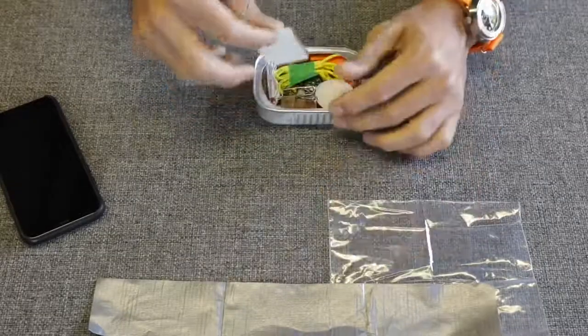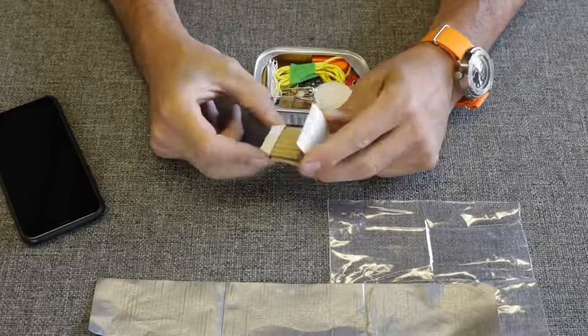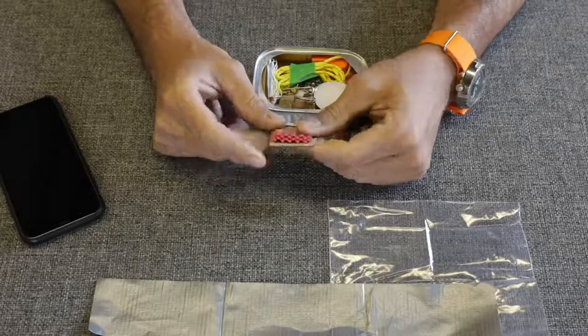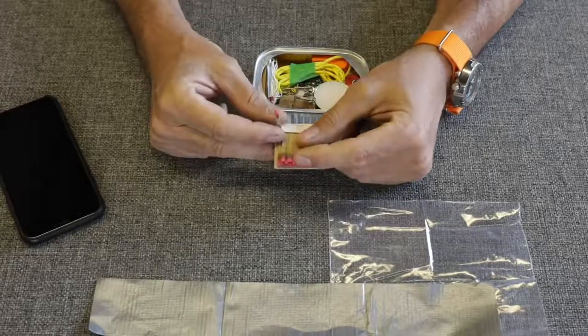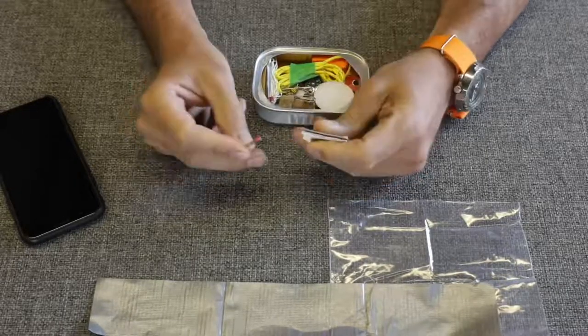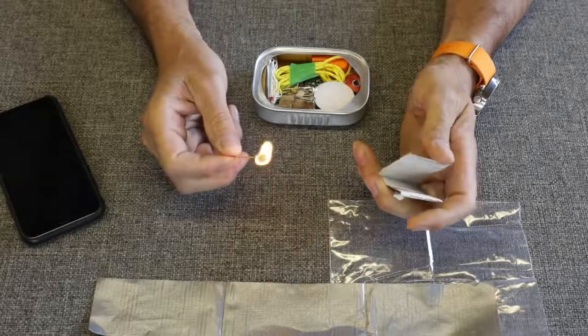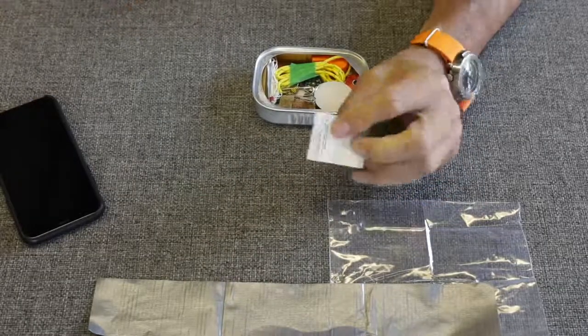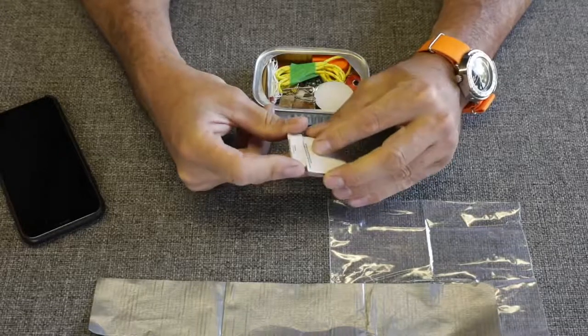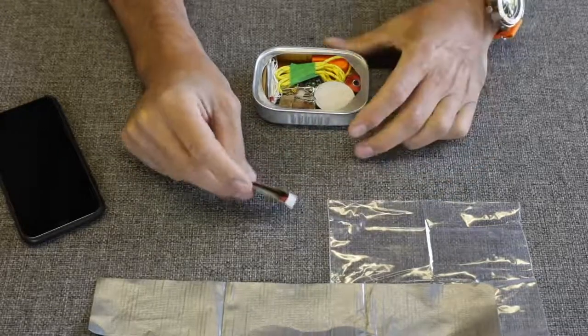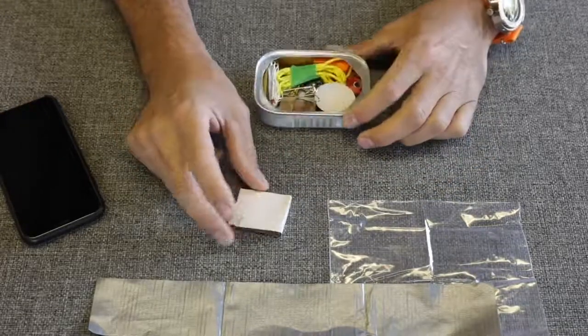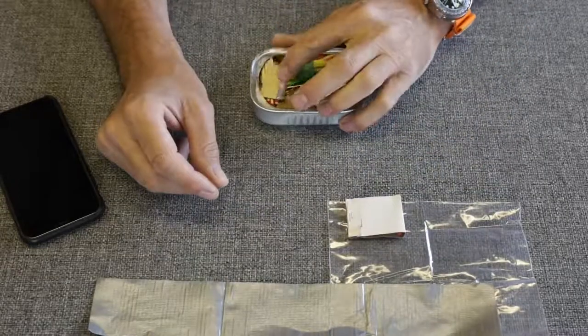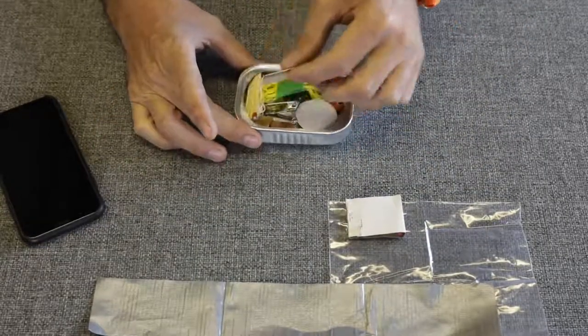Next we have paper matches, just your standard paper matches. Maybe wooden matches would be a better option. These are a little bit fragile when it comes to moist areas, but that's better than none. I think that's probably a good option. I don't know that you would even get the wooden matches inside of one of these containers. It's very small.